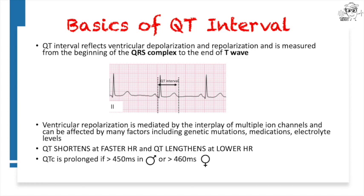Because of the change of the QT interval with heart rate, we correct it for heart rate and call it QTc. QTc is prolonged if it is more than 450 milliseconds in males and more than 460 milliseconds in females.